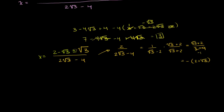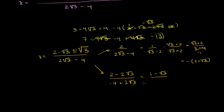The other possible value of x: if we subtract the square root of 3, the numerator becomes 2 minus square root of 3 minus square root of 3, that's 2 minus 2 square roots of 3, over negative 4 plus 2 square roots of 3. Dividing numerator and denominator by 2, we get 1 minus square root of 3 over negative 2 plus square root of 3. Now we rationalize by multiplying by negative 2 minus square root of 3 over negative 2 minus square root of 3.